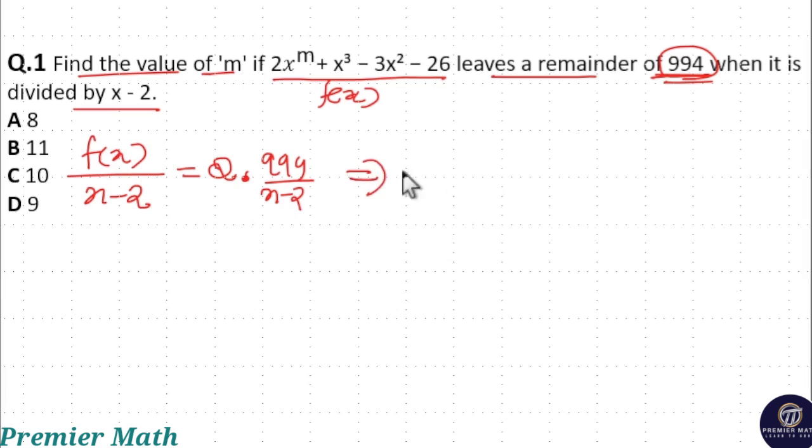f(x) equals the divisor times the quotient, that is Q(x - 2), plus the remainder 994.